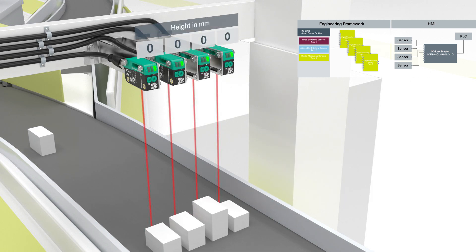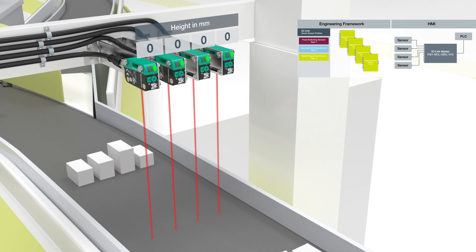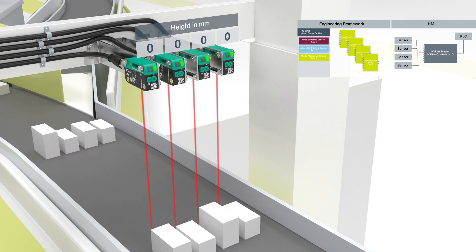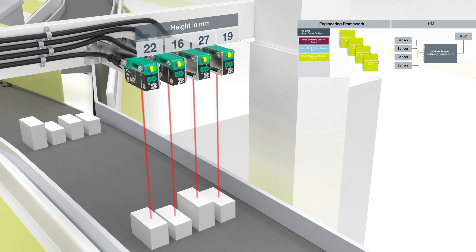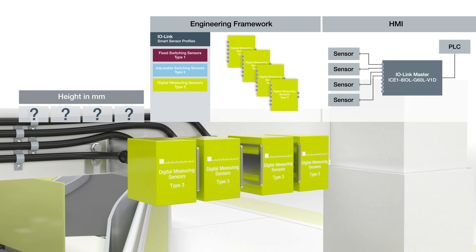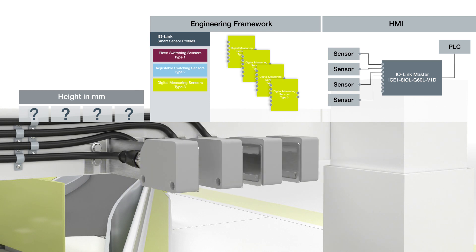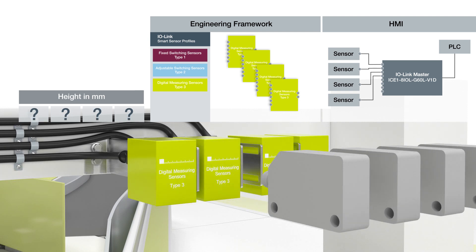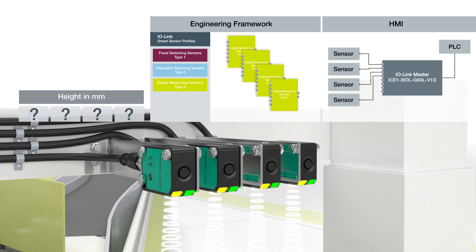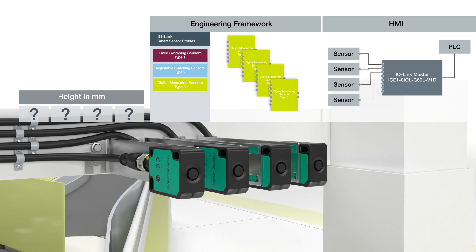With smart sensor profiles, IO-Link goes one step further. Neither the manufacturer nor the sensing technology plays a role. Once a device of one profile class has been integrated into the control system, the integration of additional devices in the same profile class is extremely simple. As needed, the photoelectric distance sensor can be replaced with a photoelectric distance sensor from another manufacturer or a different kind of measuring sensor, such as an ultrasonic sensor, at any time — all without the need for additional programming.